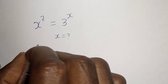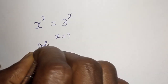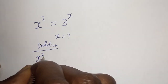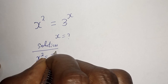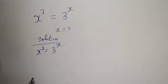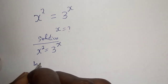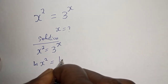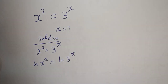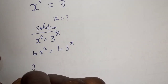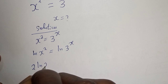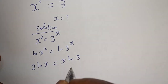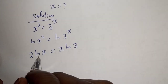Solution: s squared is equal to 3 raised to power s. Let's take the natural log of both sides. ln of s squared is equal to ln of 3 raised to power s. Then this gives us 2 ln of s is equal to s times ln of 3.